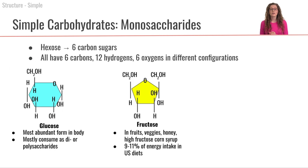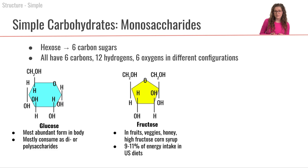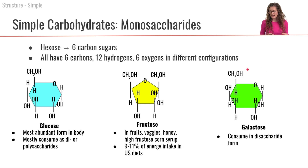The next monosaccharide is fructose. Fructose is also composed of that same six-carbon structure, just in a slightly different configuration. Where do we get fructose in the diet? It comes from fruits, veggies, honey, and high fructose corn syrup. Fructose contributes about 9 to 11% of the energy intake in the U.S. I'm always going to represent fructose as yellow in this lecture series. And then the third monosaccharide is galactose — I'll always represent galactose as green. Galactose we consume in a disaccharide form.